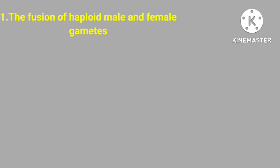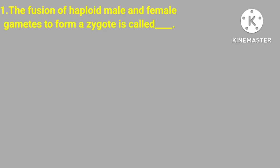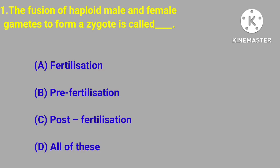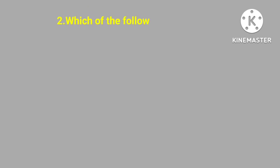Question number one. Fusion of haploid male and female gametes to form a zygote is called: fertilization, pre-fertilization, post-fertilization, all of the above. Correct answer is fertilization.